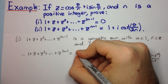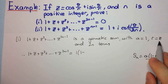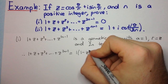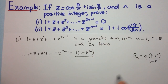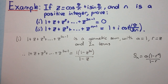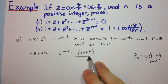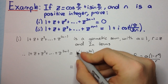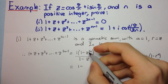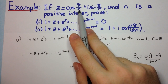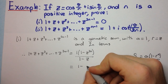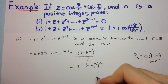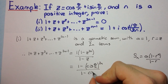Here, a is 1, r is z, and we have 2n terms. So the sum equals (1 − z^(2n)) / (1 − z). Now we need to show this is 0. We substitute z as cos(π/n) + i·sin(π/n), which can be written as cis(π/n). So we have 1 minus cis(π/n) all to the power 2n, over 1 minus cis(π/n).